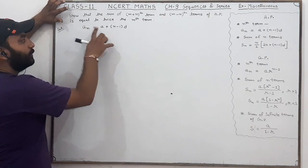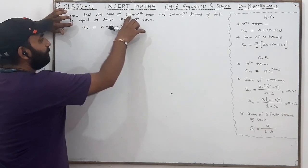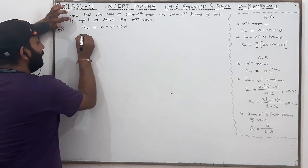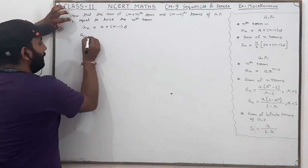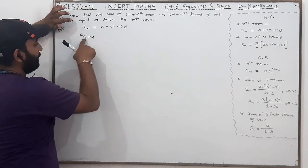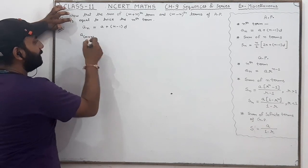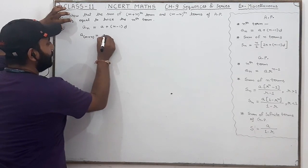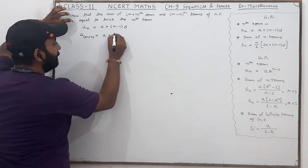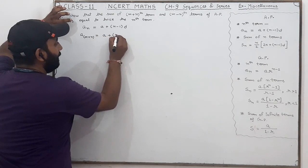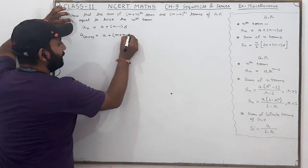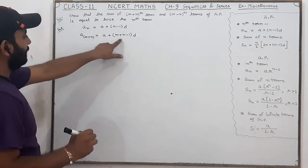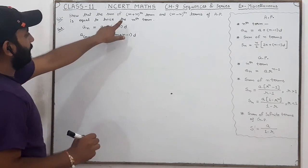I will find the (m+n)th term. So wherever n is, we will write (m+n) in its place. So a_{m+n} = a + (m+n-1)d. This is our (m+n)th term — this will be equation one.